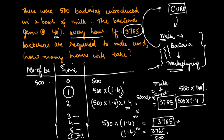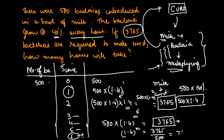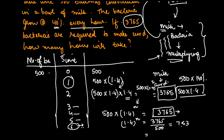Let me take the help of a calculator. 3,765 divided by 500 equals 7.53. You can also write 7.53 as 1.4 to the power 6 approximately, which gives you n equals 6.